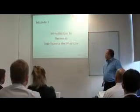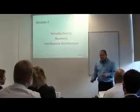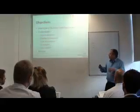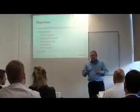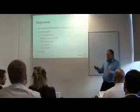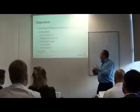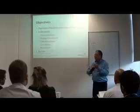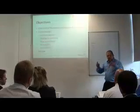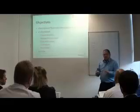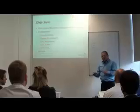Let's move on to module one — the introduction to the business intelligence architecture. Our objectives are to provide an overview of the BI architecture, which is principally made up of four areas: your source system, your staging environment, your data warehouse, and your data marts. I'll give you a couple of tips along the way — some mnemonics to help remember the concepts — and at the end we'll do a quick review to make sure everything has stuck.